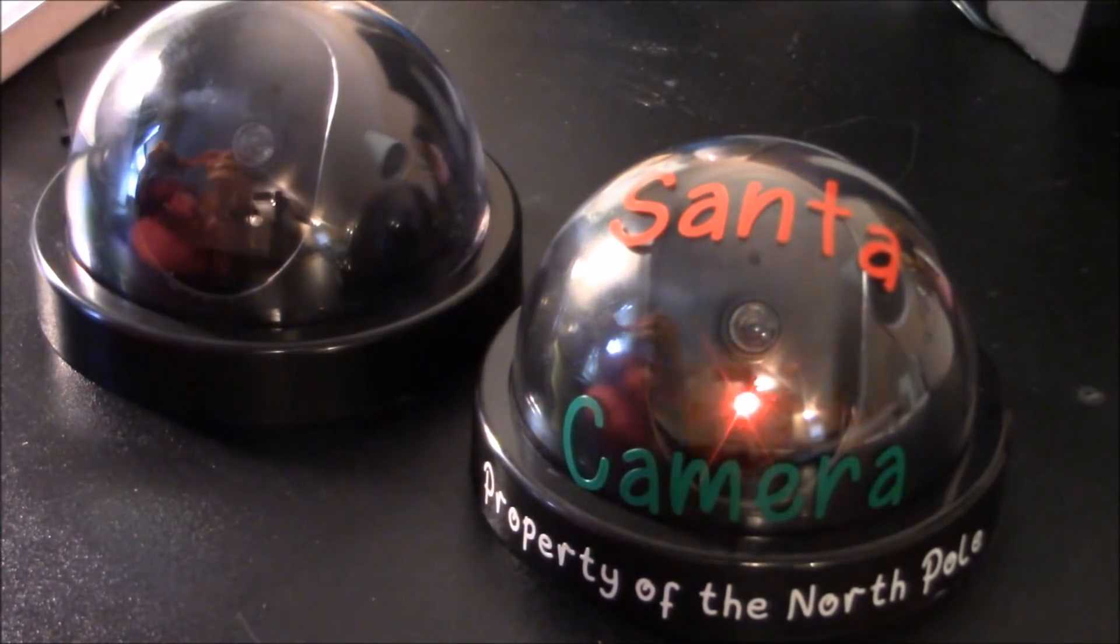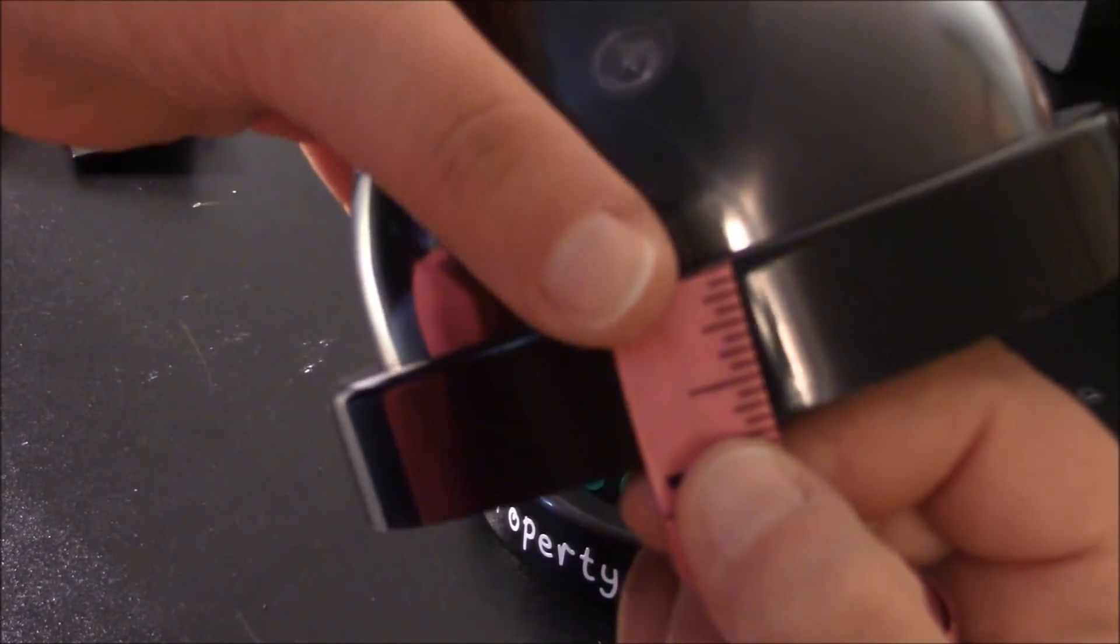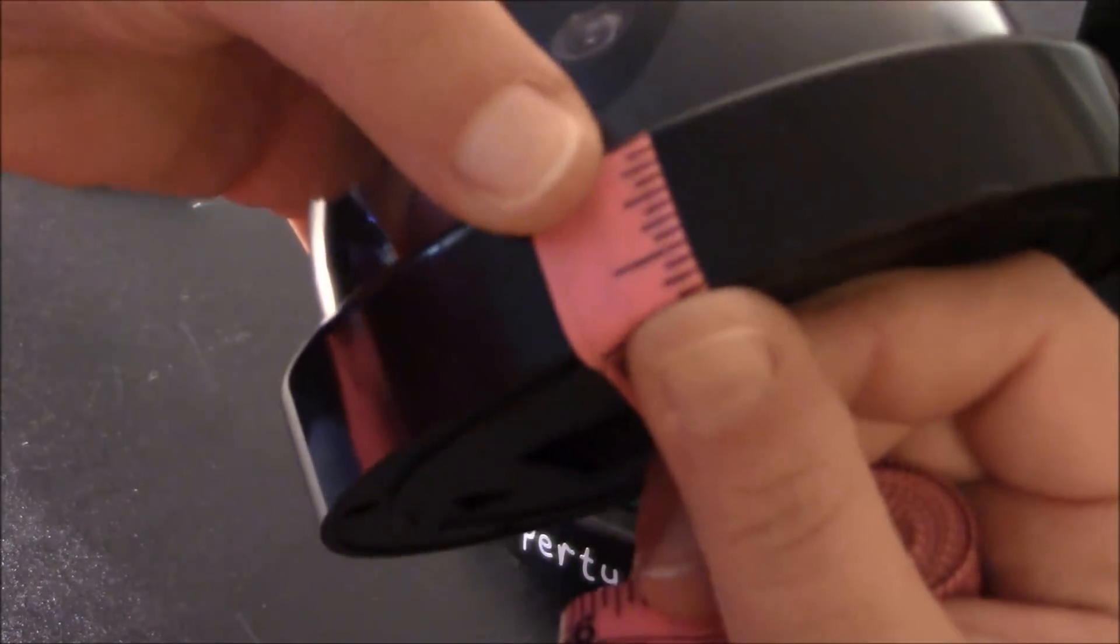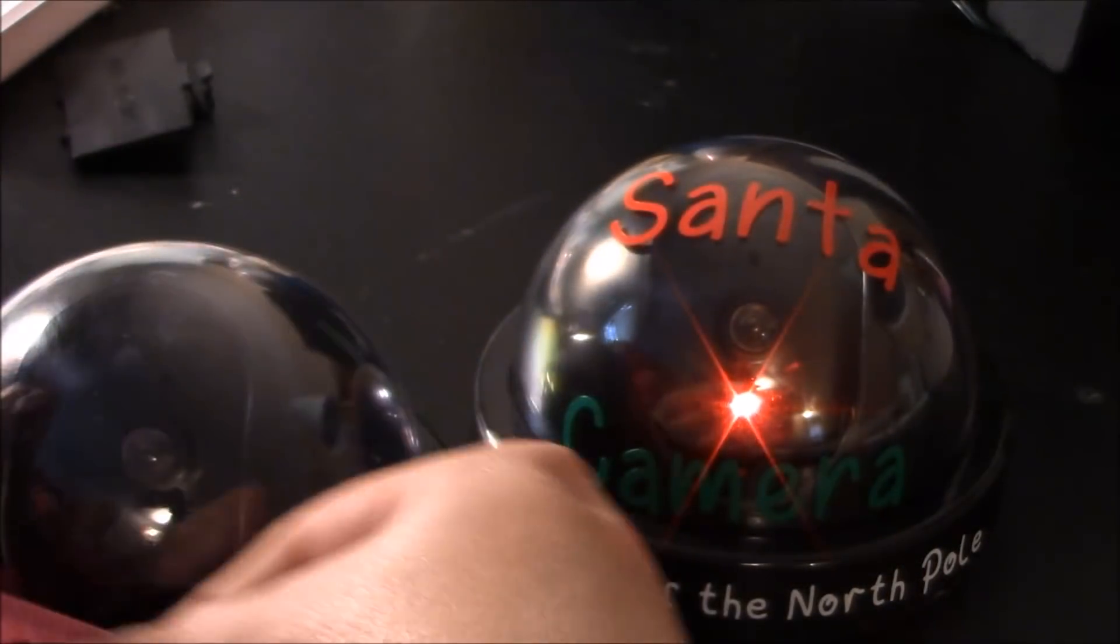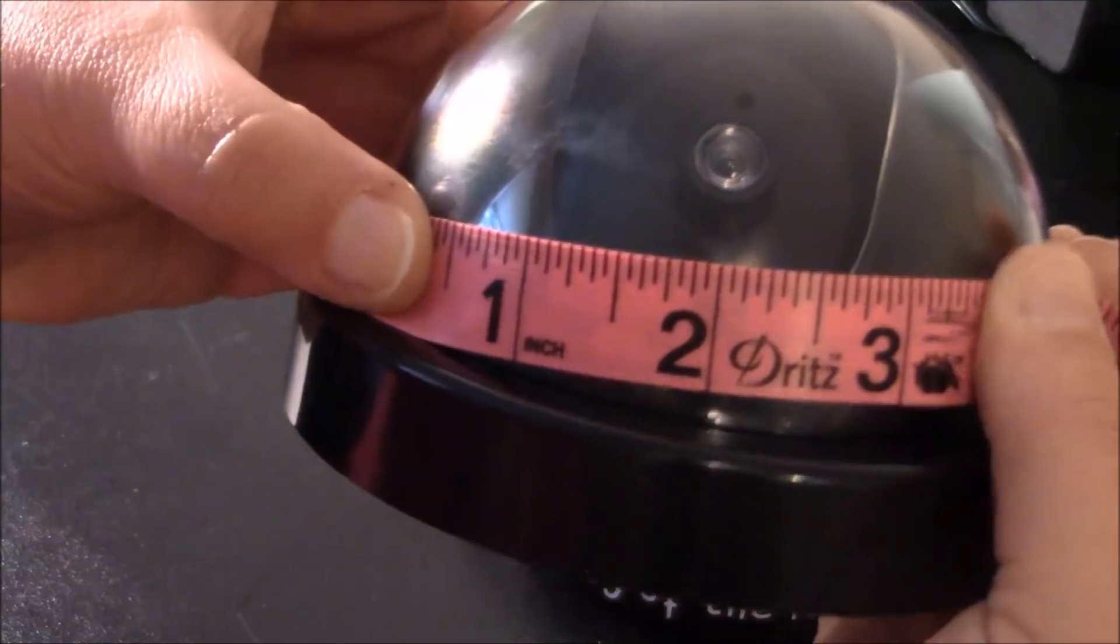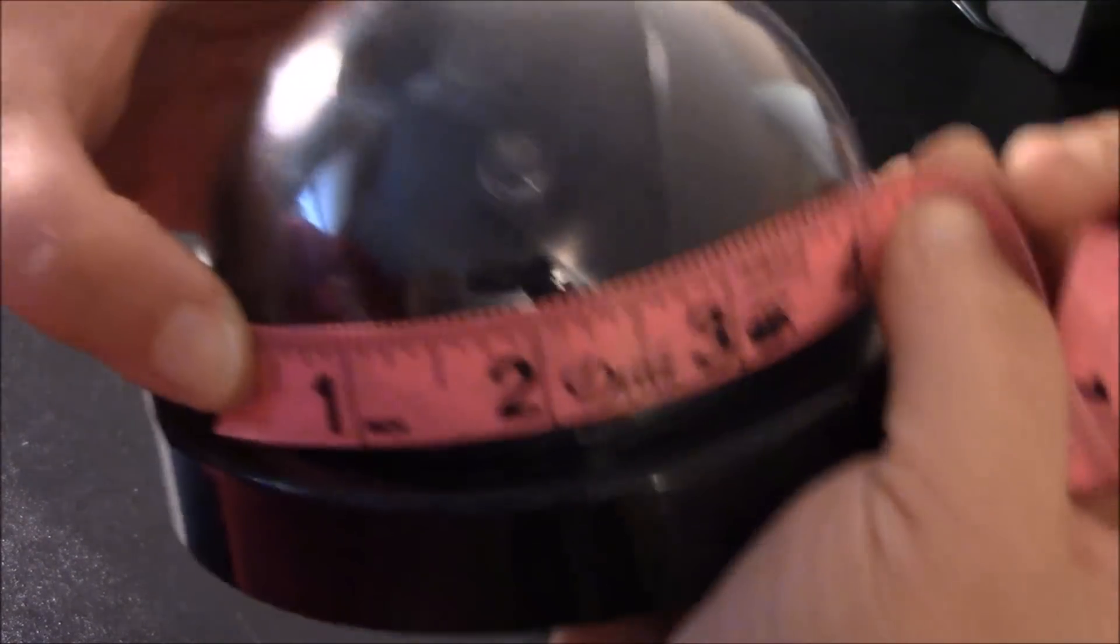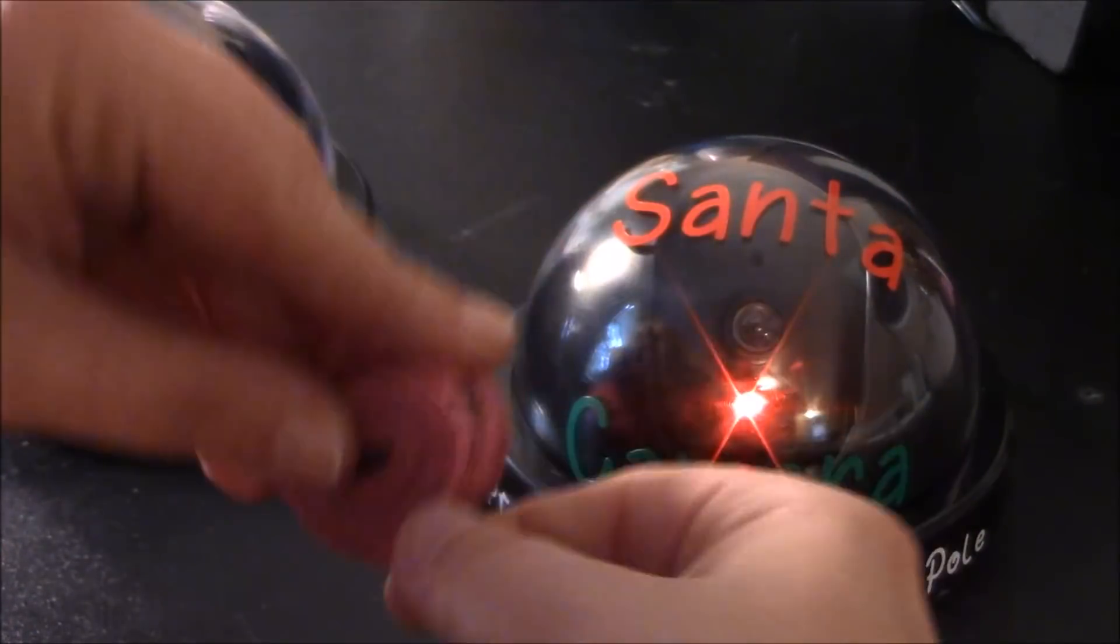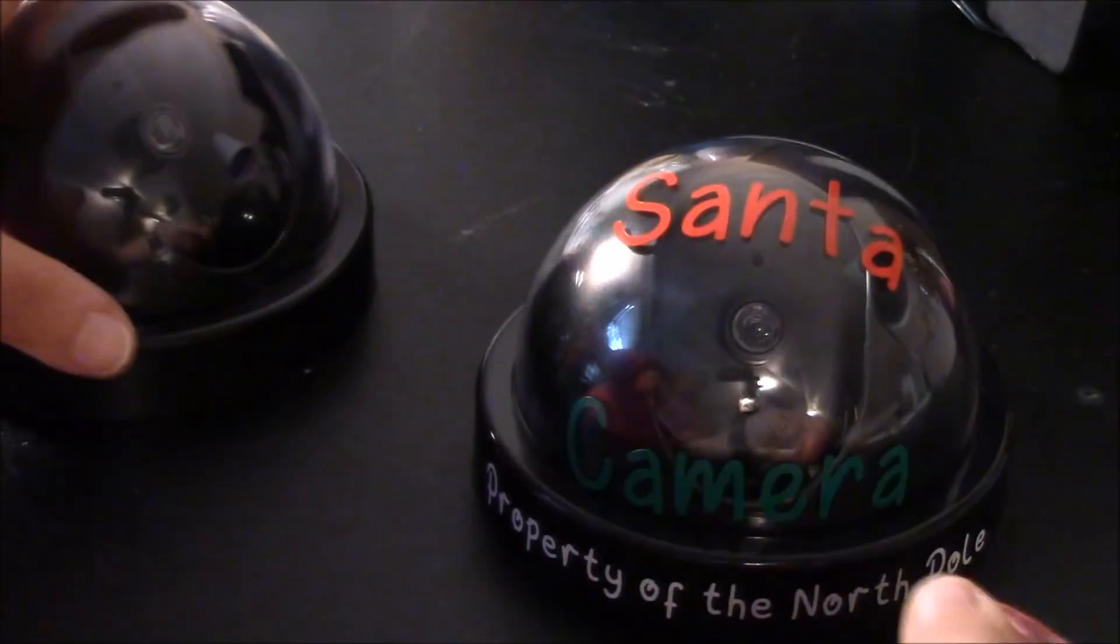Before we start, I always measure my project and see about how big I can make my words and things. So we're going to make sure that we measure this base to see about how deep it is and it's a little over half an inch. And then I like to measure just here in front of the camera so that I can get an idea of how big I can make my words and be able to see them. I always find a measuring tape for this type of stuff that's rounded to work much better than a ruler.